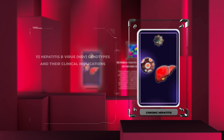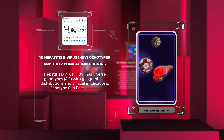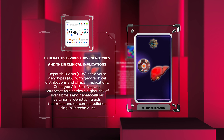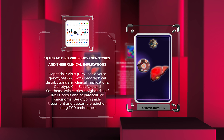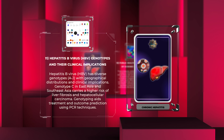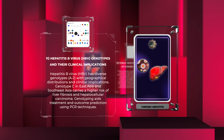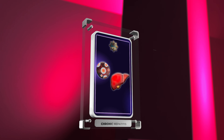Hepatitis B virus (HBV) has diverse genotypes A through J, with distinct geographical distributions and clinical implications. Genotype C, prevalent in East Asia and Southeast Asia, carries a higher risk of liver fibrosis and hepatocellular carcinoma. Genotyping aids treatment decisions and outcome prediction using PCR techniques.